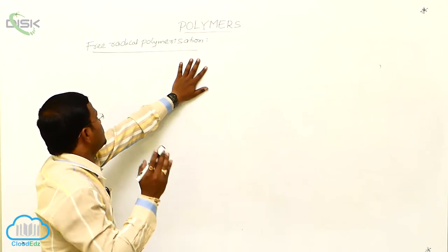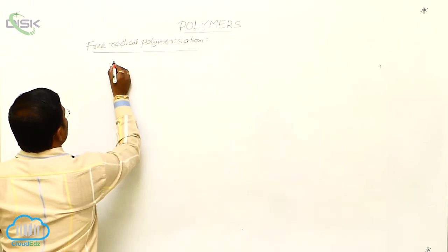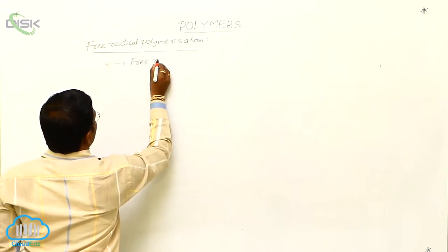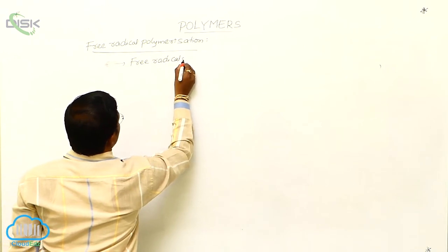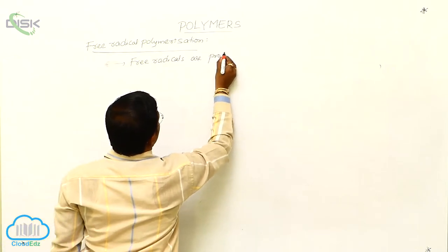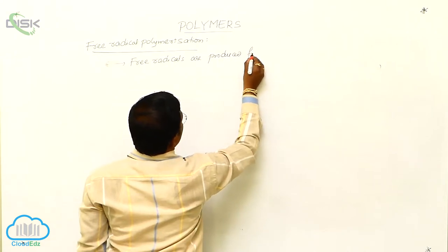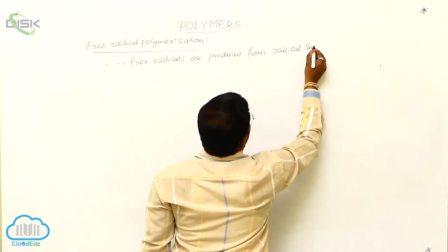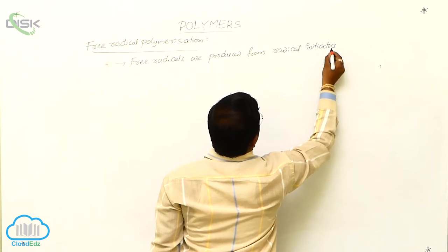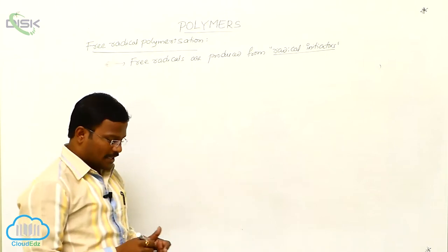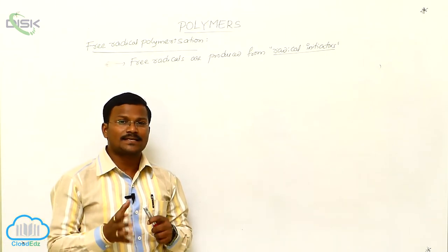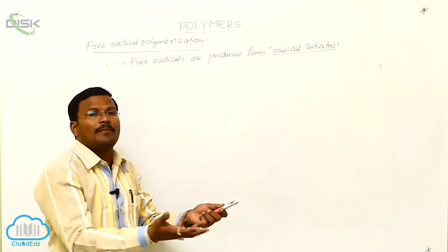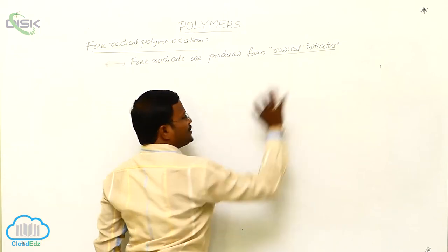Those polymerization reactions initiated by free radicals are called free radical polymerization reactions. Here, free radicals are produced from radical initiators. The chemical substances which can promote the homolytic cleavage of chemical bonds to produce free radicals are called radical initiators.